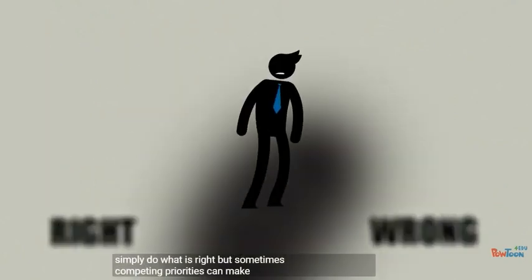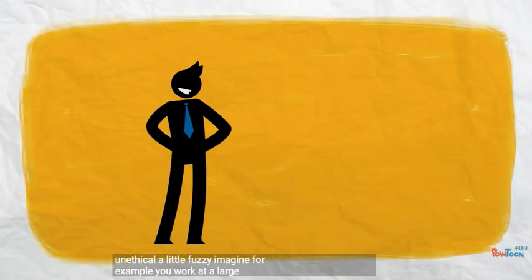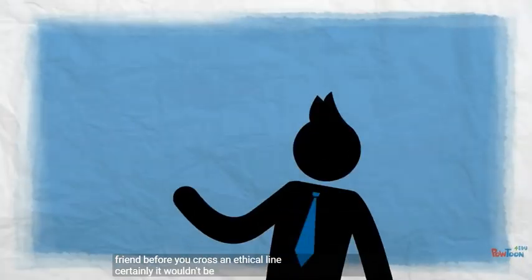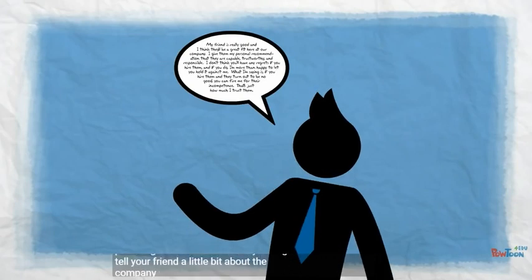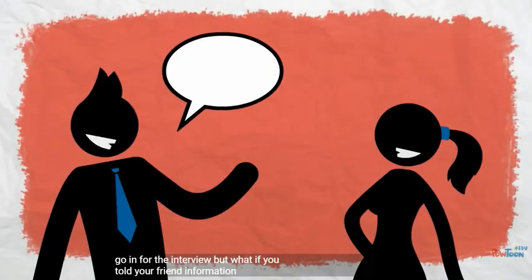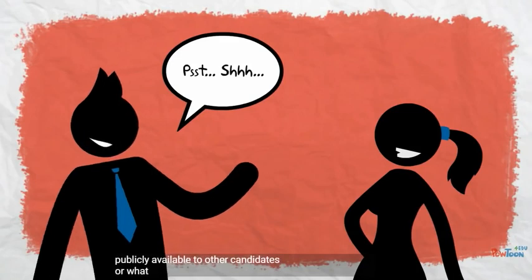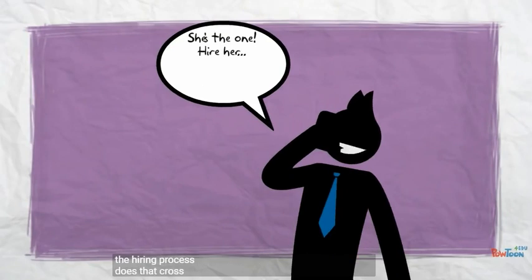But sometimes, competing priorities can make the line between what is ethical and what is unethical a little fuzzy. Imagine, for example, you work at a large company. A friend of yours is applying for a job there. How much help can you give your friend before you cross an ethical line? Certainly it wouldn't be a problem to put in a good word for them, or you might tell your friend a little bit about the company policy and culture before they go in for the interview. But what if you told your friend information about the position or hiring manager that isn't publicly available to other candidates? Or what if you yourself had a say in the hiring process? Does that cross an ethical line?